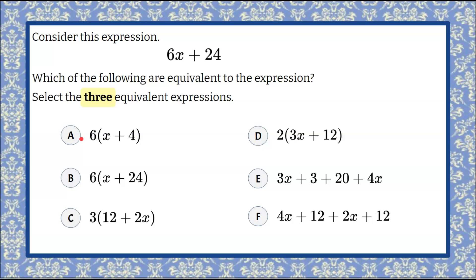We're going to start with A. So we see that we have 6 multiplied by the quantity x plus 4. We're going to distribute. 6 multiplied by x is equal to 6x. Then we distribute the 6 to the second term, which is positive 4. 6 times positive 4 is positive 24. 6x plus 24 is equivalent to 6x plus 24. Therefore, one of our answer choices is A.